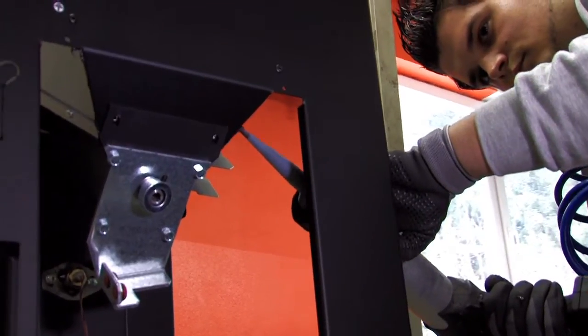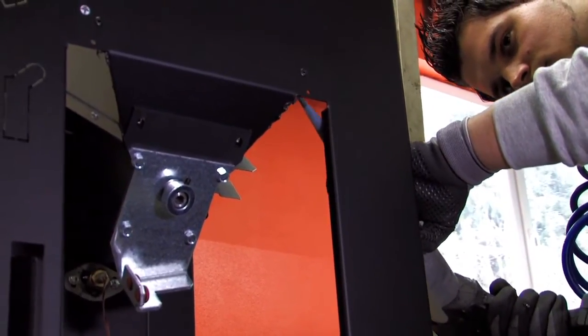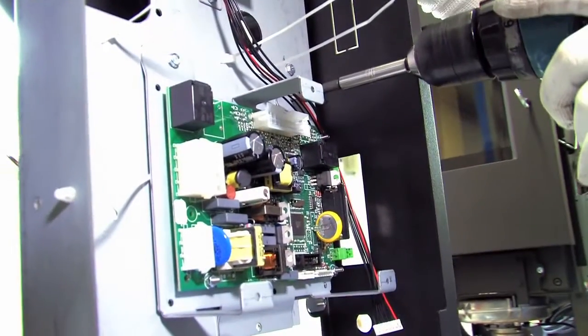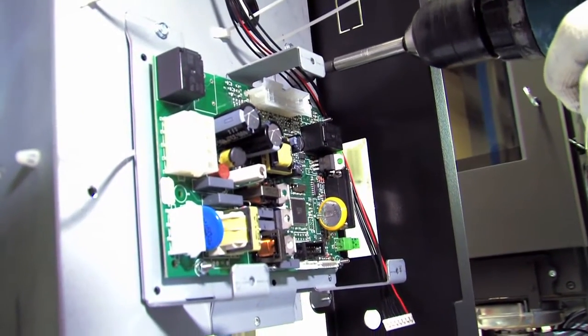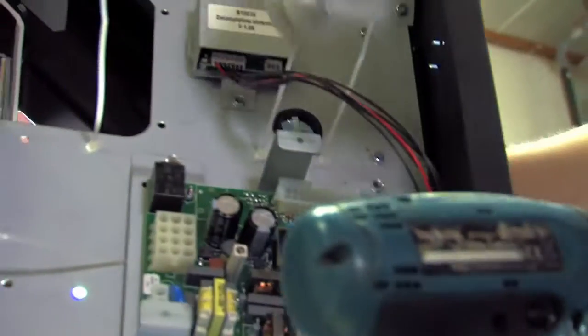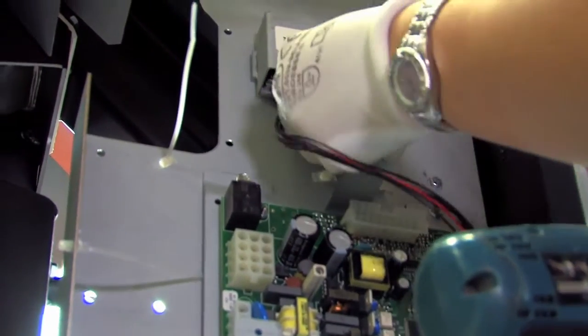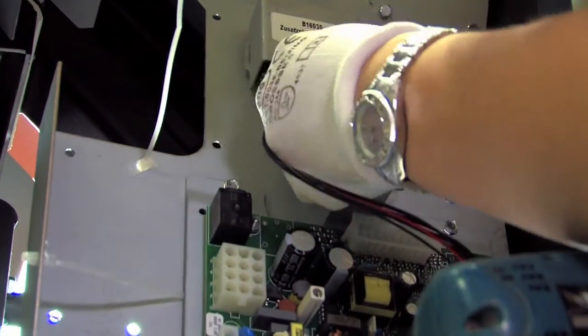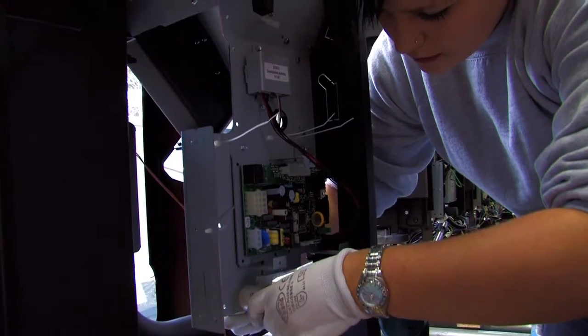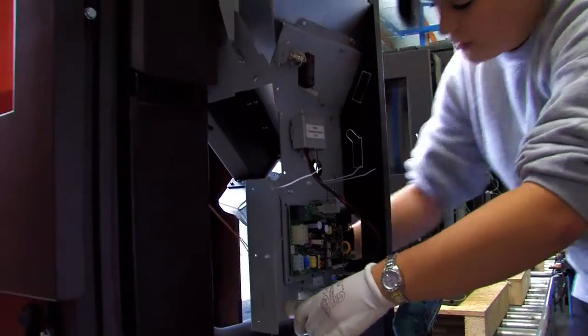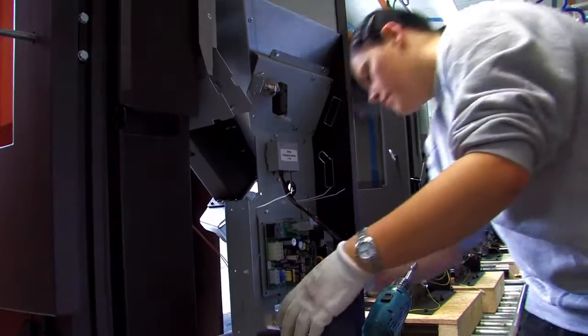The microprocessor-controlled regulator controls the interaction between the individual components. The regulator can also be expanded easily, for example with a room temperature sensor or a GSM module enabling communication with the stove via SMS.